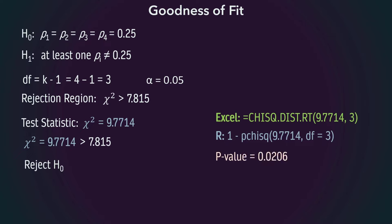Using software, the p-value is 0.0206, which is less than 0.05. So, we reject the null hypothesis.